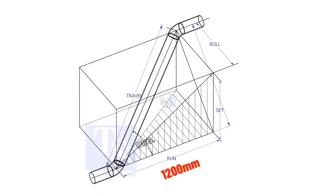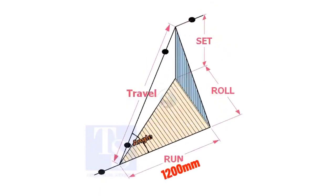Assume that the run is 1200 mm, set is 1000 mm and the roll is 800 mm. Calculate the travel length.